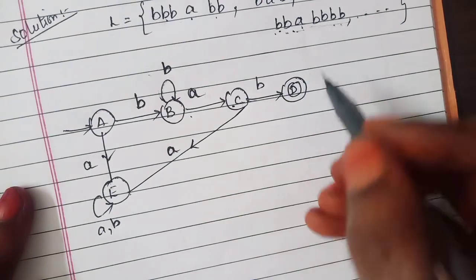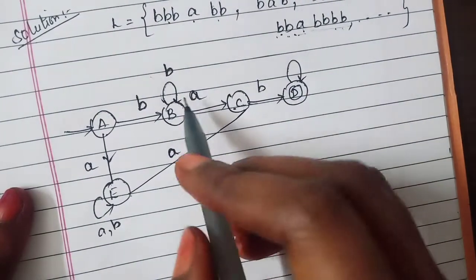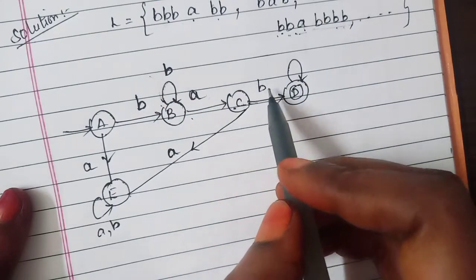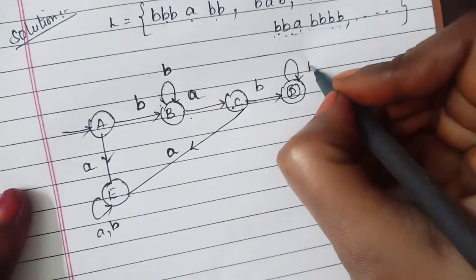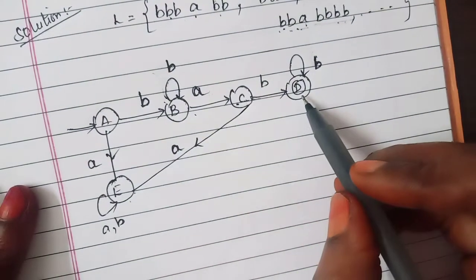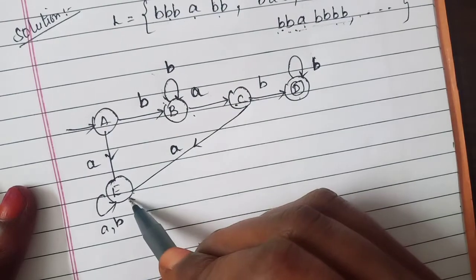This is known as final state. In this final state b followed by any number of a and you are having followed by any number of b's and you will provide this b here over here.